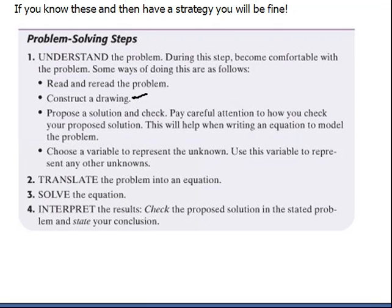The next part says translate the problem into an equation, which we've worked on before. Then we solve that equation, which is the next progression. And then lastly, it says interpret the results. Check the proposed solution in the stated problem and state your conclusion. This is where you go back and you re-read the problem and make sure that whatever you've gotten for your answer makes sense. Make sure that it actually answers the question that was proposed to you. In the next lessons, we'll begin actually working some of these problems.